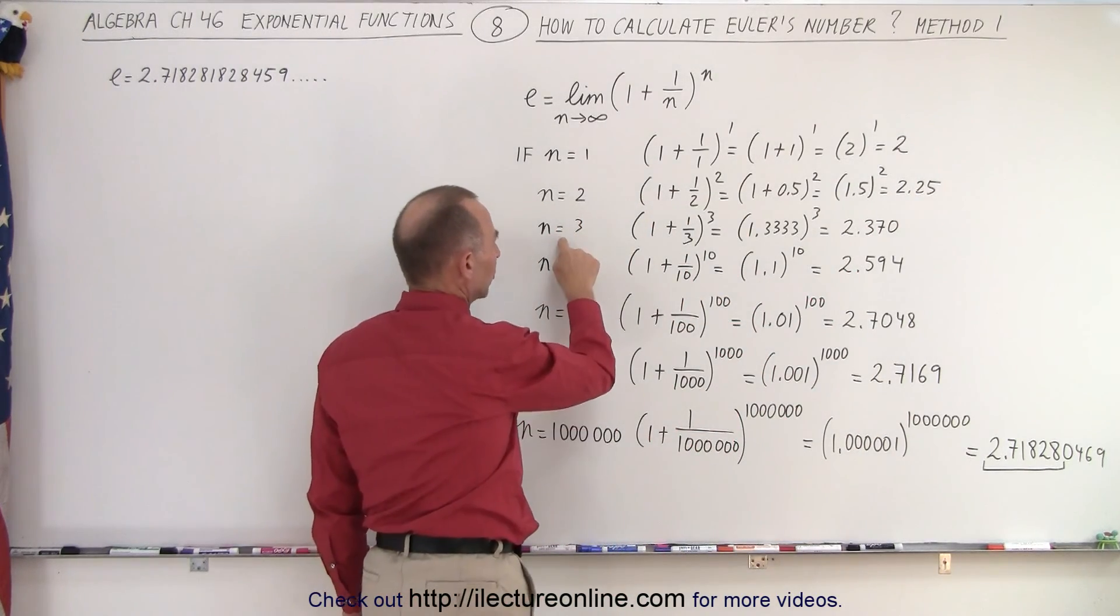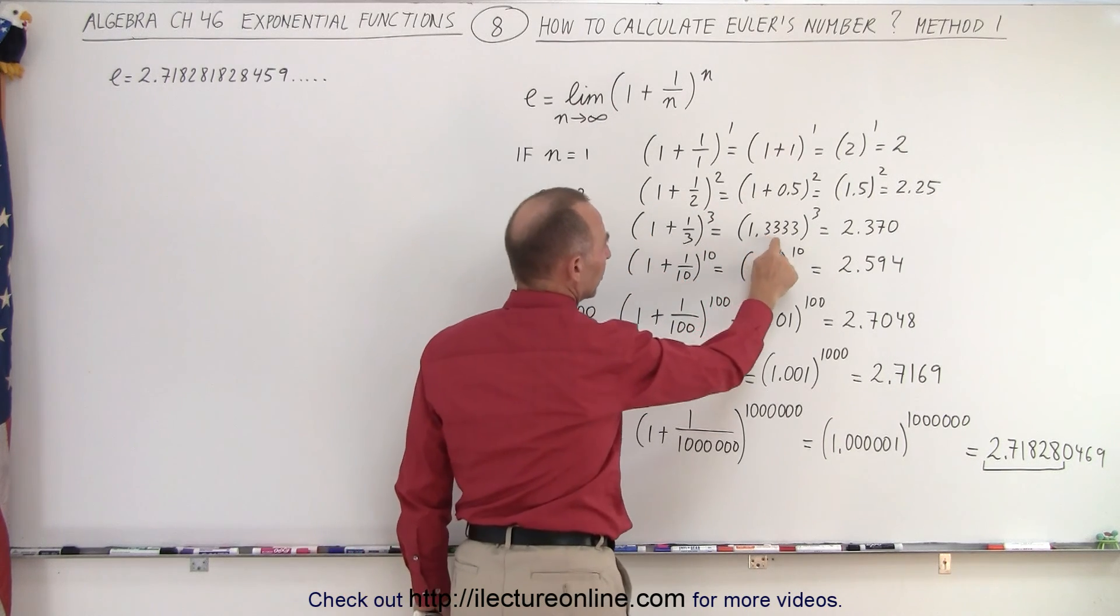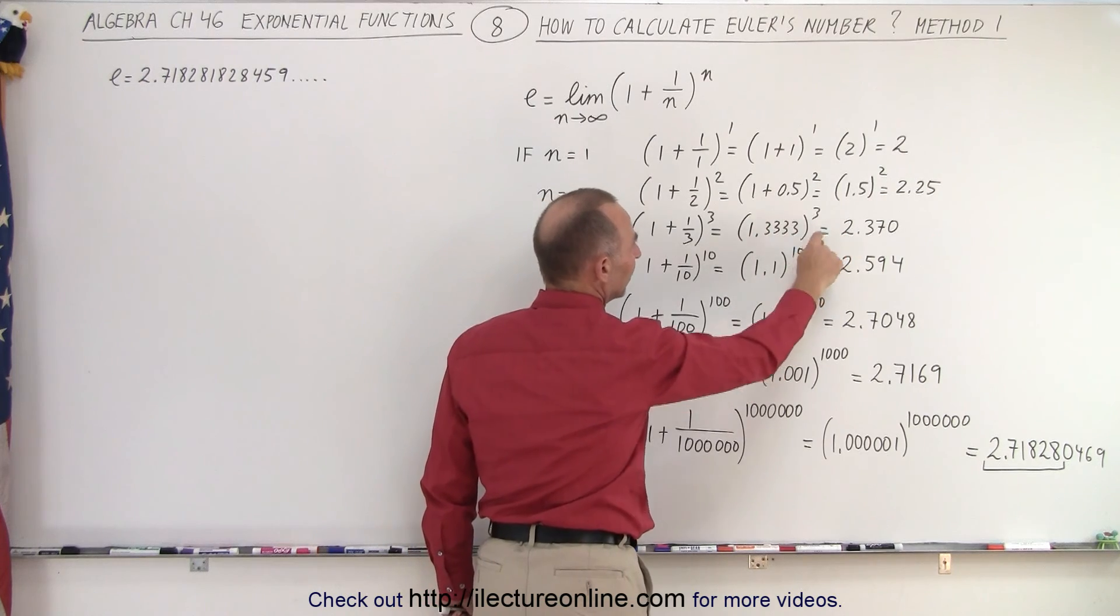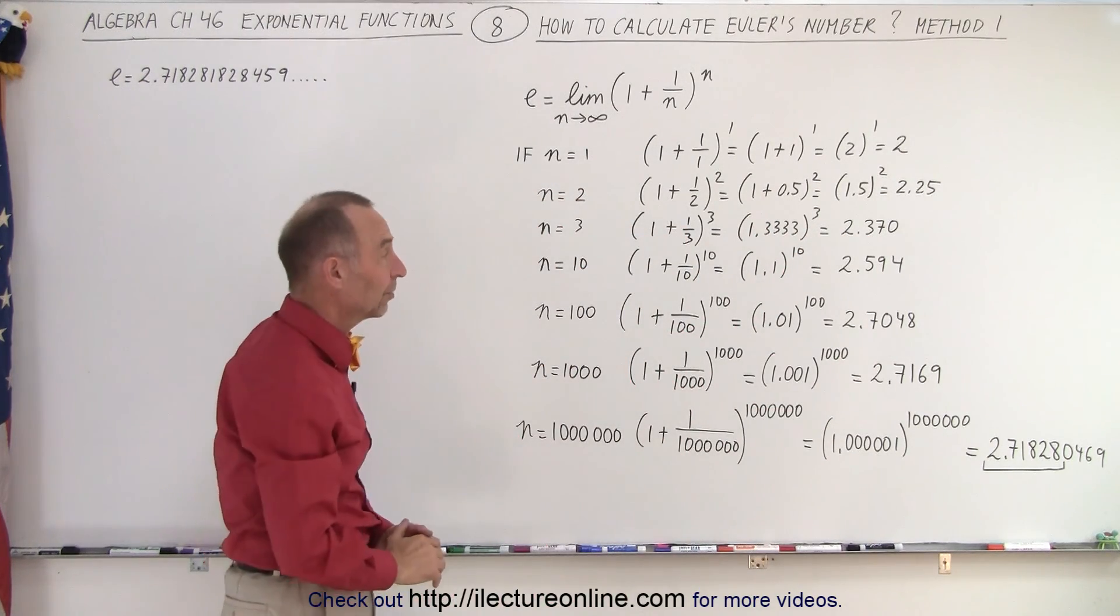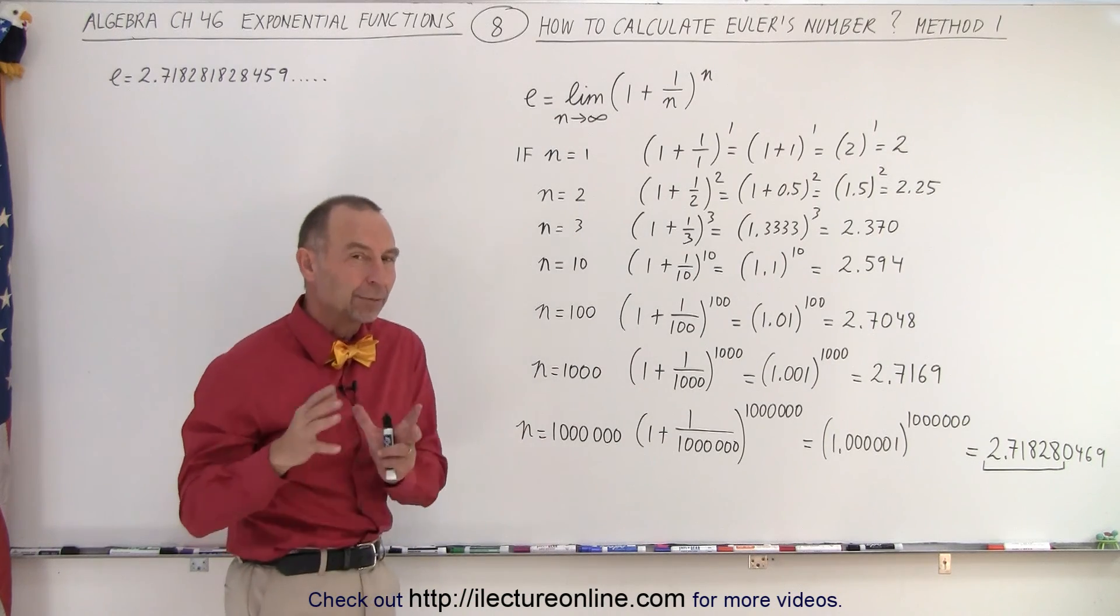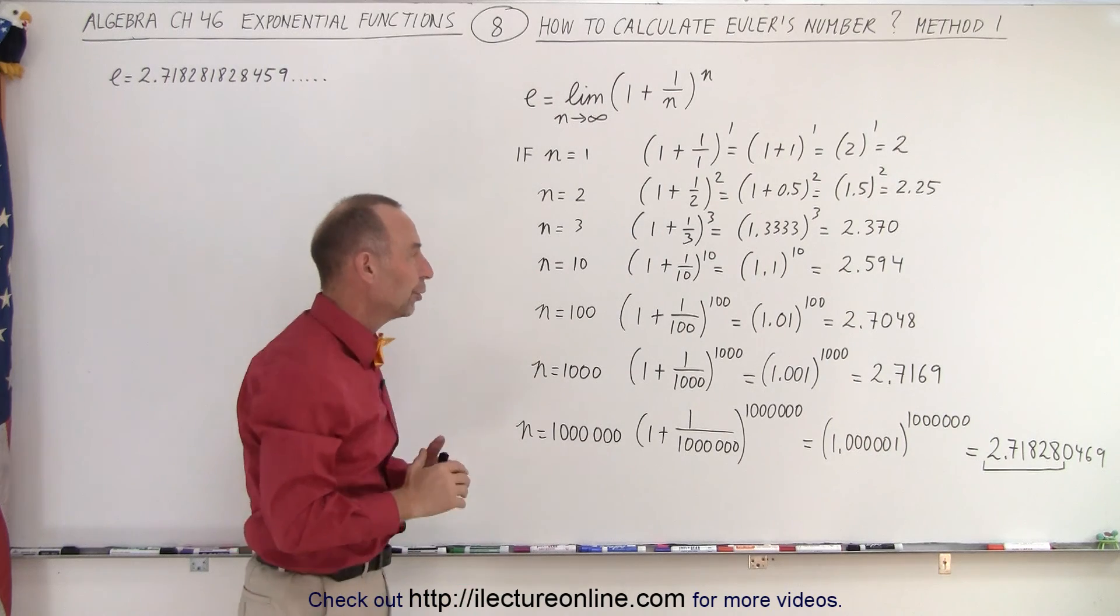What if n equals 3? Now we get 1 plus 1 over 3, the whole thing to the third power, or 1.3333 repeating, to the third power, which is 2.370 to three decimal places. And again, you can see as n becomes bigger, we get closer and closer to the true value of Euler's number.